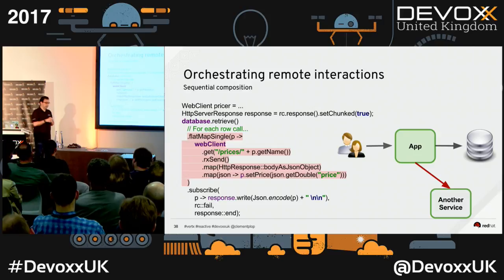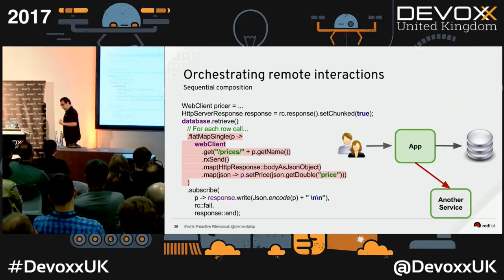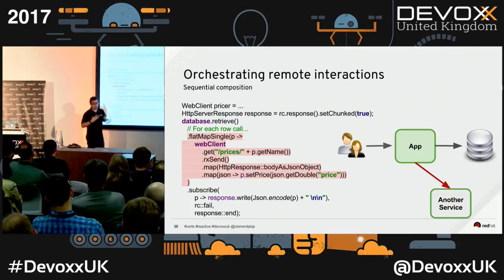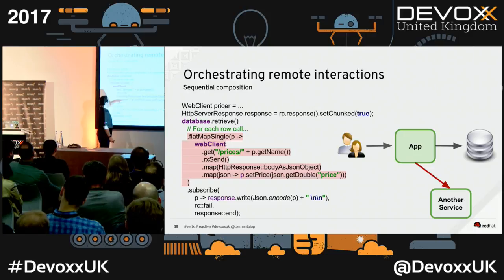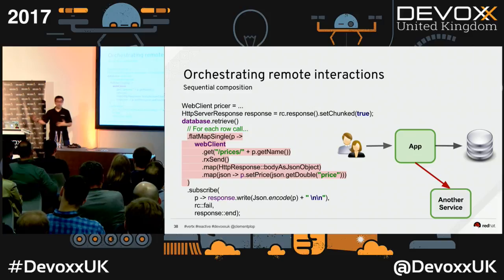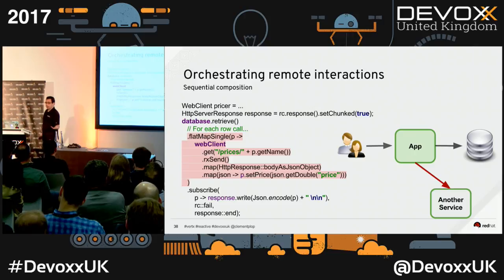Let's say you need to call a pricer every time you get a product from the database — a distributed remote service to get the current price. For each row, I use a flatMap to call my web client (an HTTP client in Vert.x) and call the pricer. When that completes, I write the response to my HTTP response. Here we see sequential composition with Vert.x and reactive extension — you just flatMap.